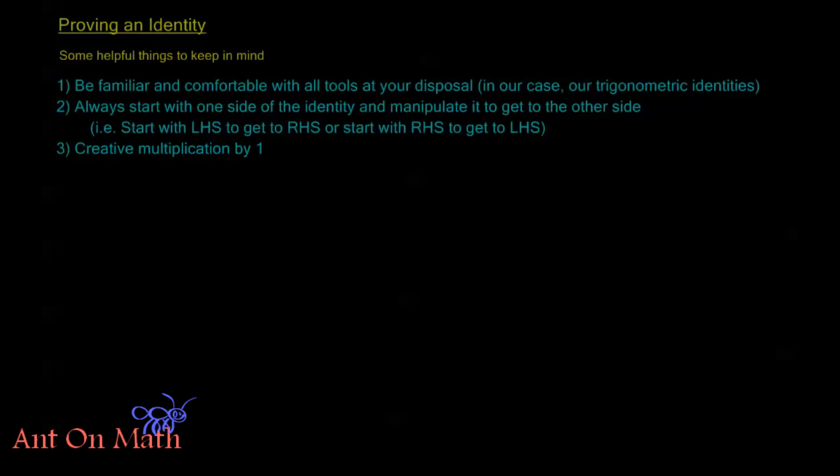Welcome back to AntonMath. In the last video we looked at some of our fundamental trig identities and we looked at simplifying trigonometric expressions by using these identities. In this video we're going to be looking at verifying or proving new identities based on the identities that we already have. First I want to talk about proving an identity and some helpful things to keep in mind when we're doing this process.